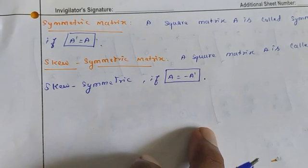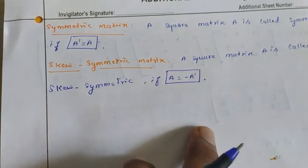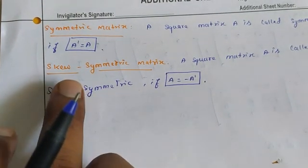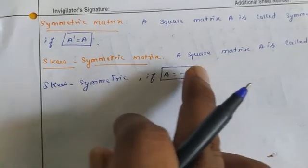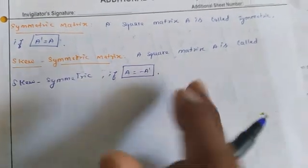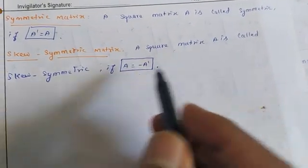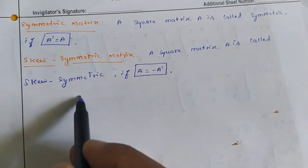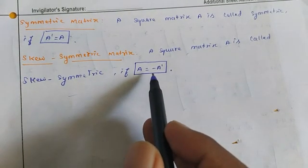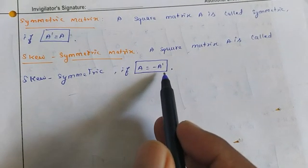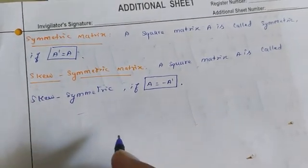It must be a symmetric matrix. For a skew symmetric matrix, a square matrix A is called skew symmetric if A equal to minus A transpose.